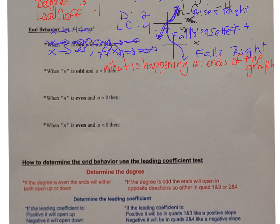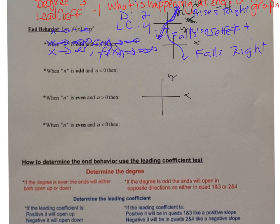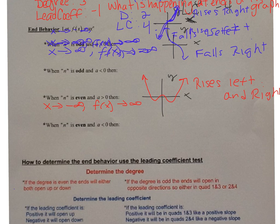When n is even — 2, 4, 6, 8 — and a is positive, both ends rise. The graph rises to the left and rises to the right. So as x goes to negative infinity, f(x) goes to positive infinity. And as x goes to positive infinity, f(x) also goes to positive infinity.